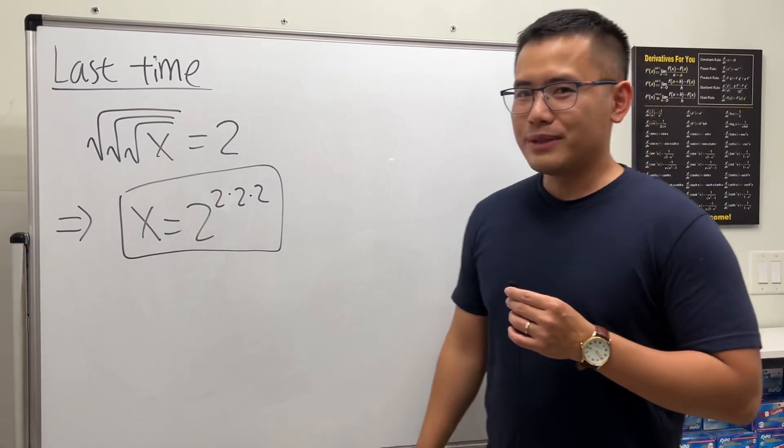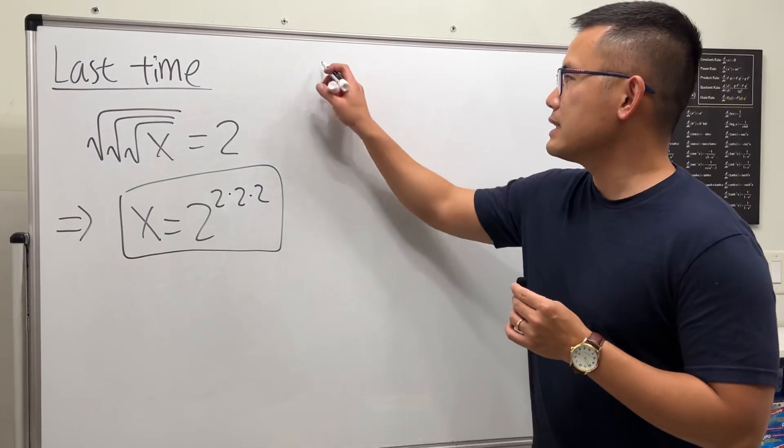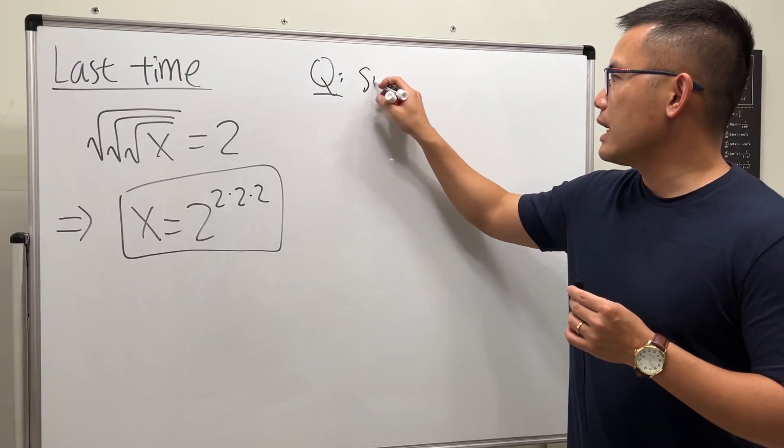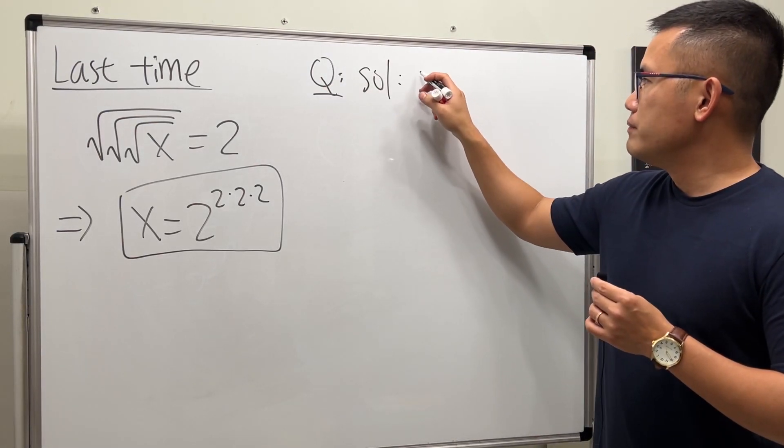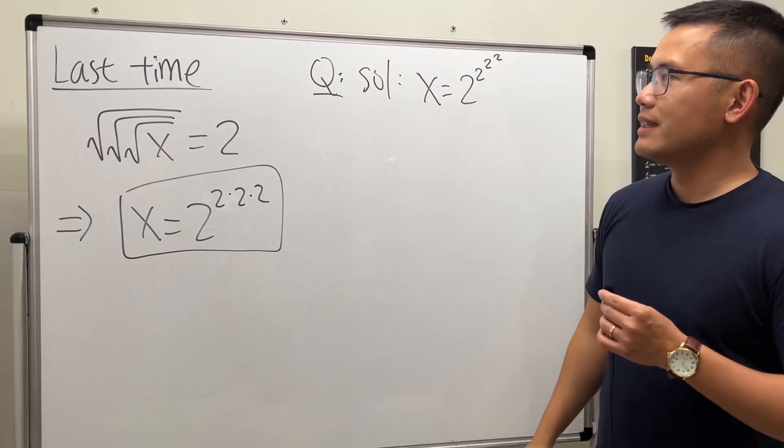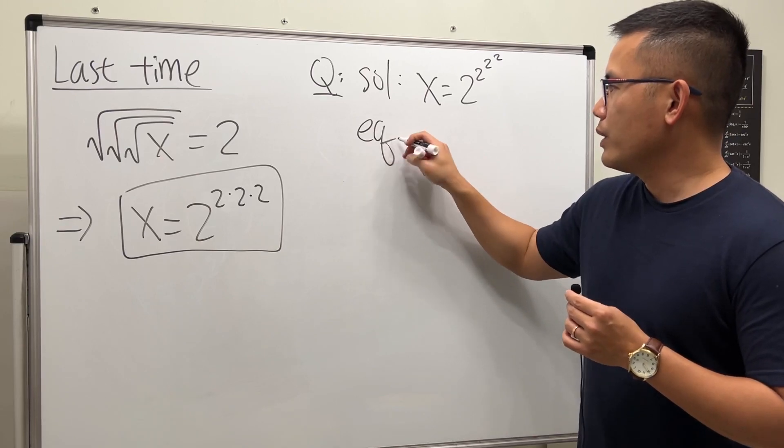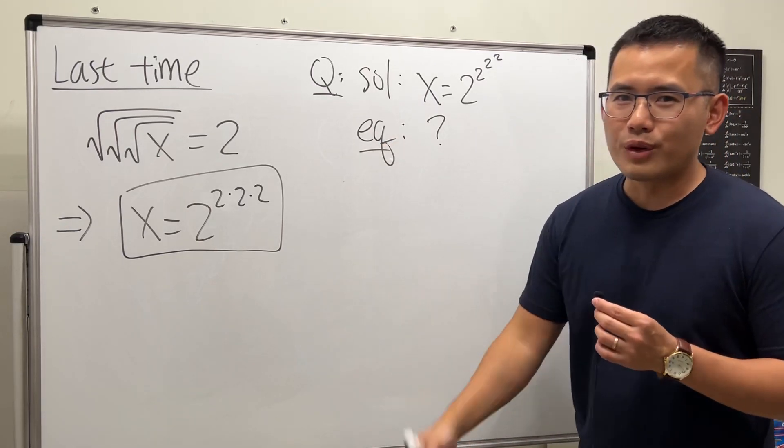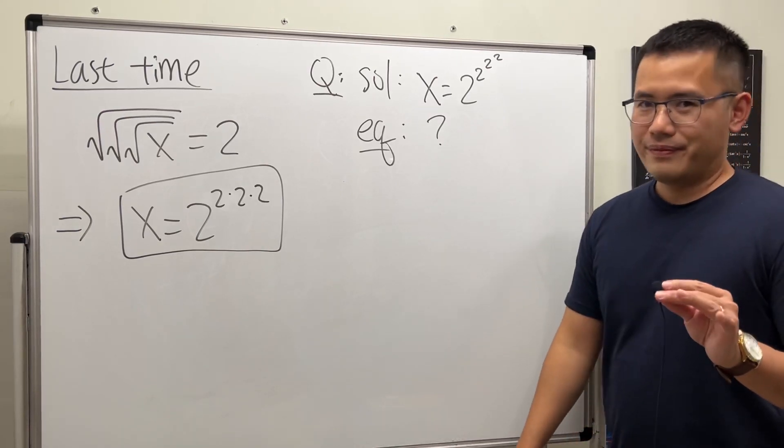Well, last time I also asked you guys how can we possibly get an equation so that the answer is actually going to give us x equals 2 raised to the 2 to 2, like this. And I would like to know what equation will give us that. So that's the question. So we have to kind of work backwards.